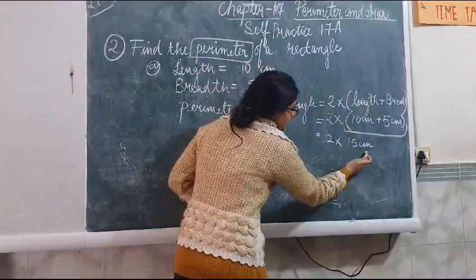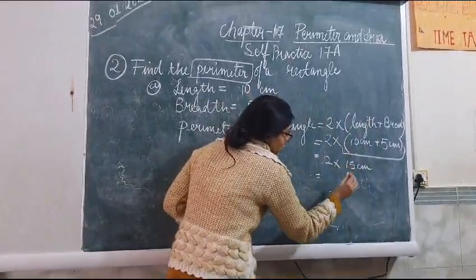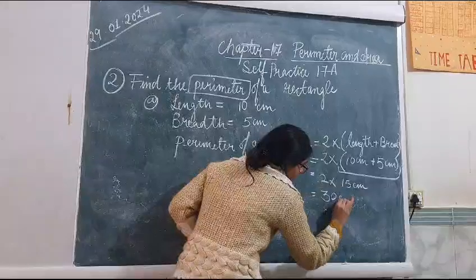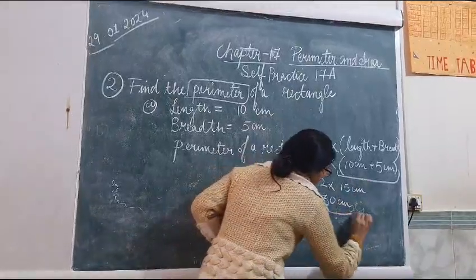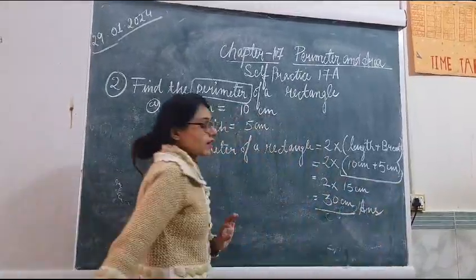Now 15 cm, we will multiply by 2. 15, 2's are 30 cm. This is the perimeter of the rectangle.